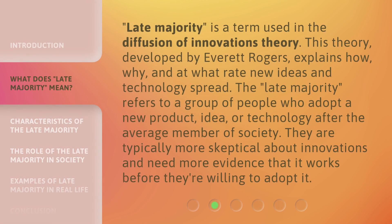Late Majority is a term used in the Diffusion of Innovations Theory. This theory, developed by Everett Rogers, explains how, why, and at what rate new ideas and technology spread. The Late Majority refers to a group of people who adopt a new product, idea, or technology after the average member of society. They are typically more skeptical about innovations and need more evidence that it works before they're willing to adopt it.